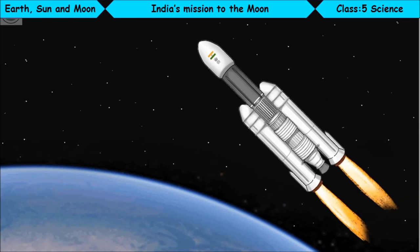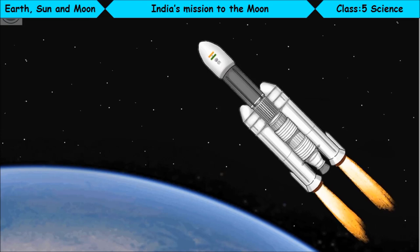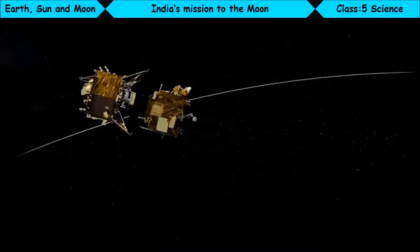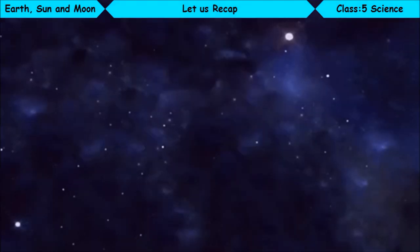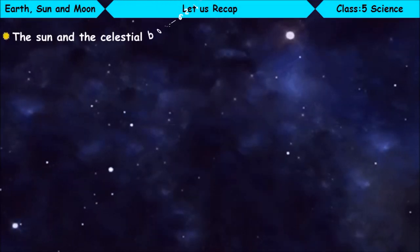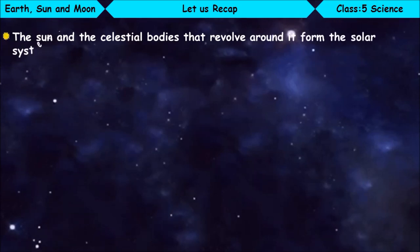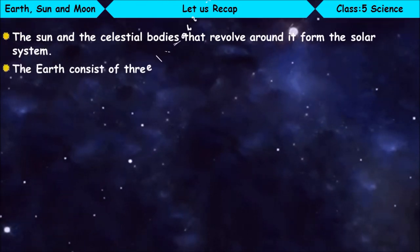The aim of the mission was to map the Moon's surface in high resolution and also get more details of the Moon. Let us recap. The Sun and the celestial bodies that revolve around it form the solar system. The Earth consists of three layers: crust,